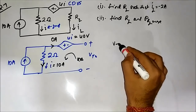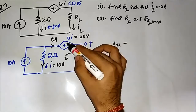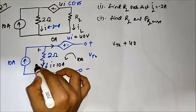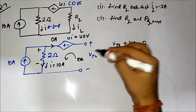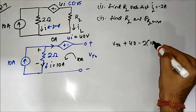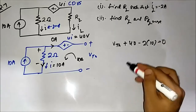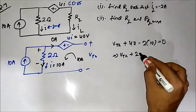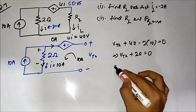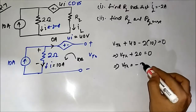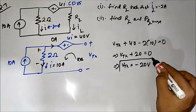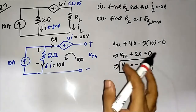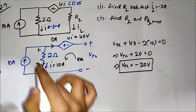Applying KVL in this direction: Vth plus 4i minus 2i equals 0. Substituting values: Vth plus 40 minus 20 equals 0, which gives Vth plus 20 equals 0, therefore Vth equals minus 20 volts.